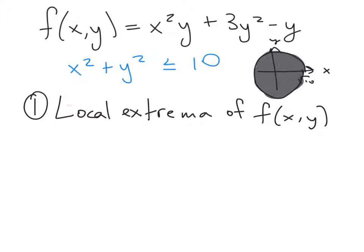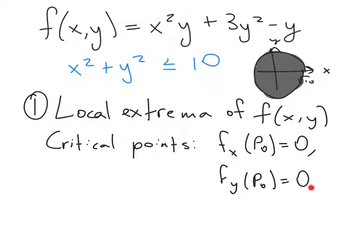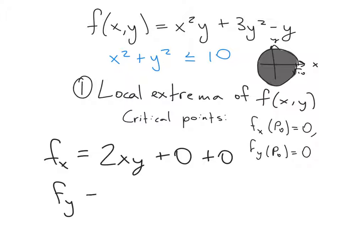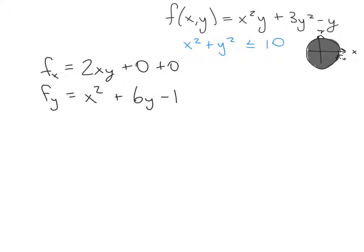We start by finding local extrema at critical points where the gradient equals zero, meaning each first-order partial derivative is zero. Computing f_x we have 2xy, and for f_y we have x² + 6y − 1.